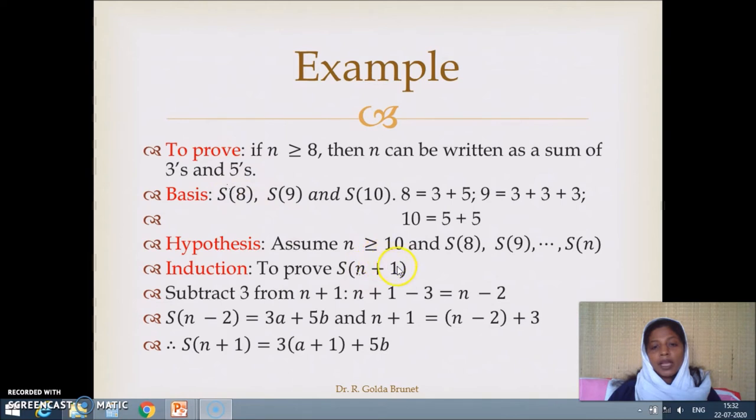Subtract 3 from n+1: n+1 minus 3 equals n minus 2. From the hypothesis, we know that S(n-2) is true because we have assumed up to S(n) is true. So S(n-2) can be written as a times 3 plus b times 5 for some a and b.